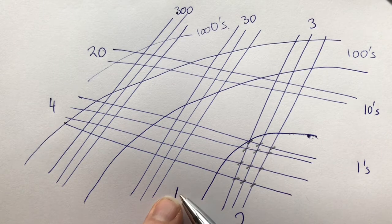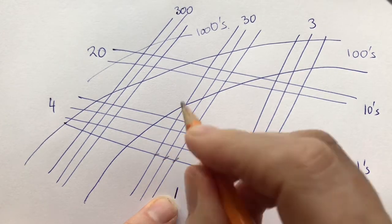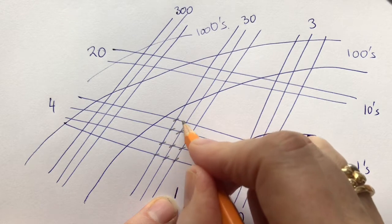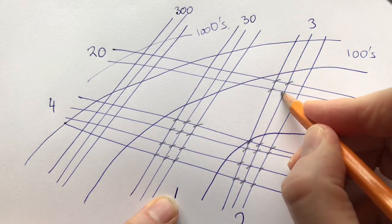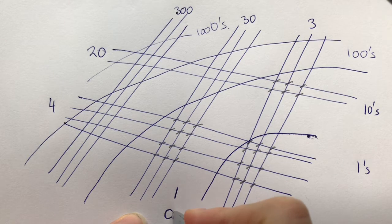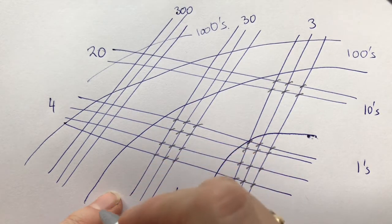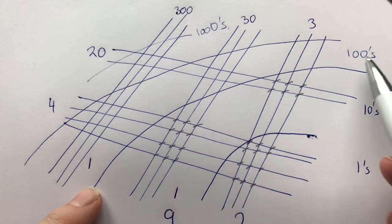Now we have our 1 here — we've got to add all of our 10 units. So we start with 1 and count: 2, 3, 4, 5, 6, 7, 8, 9, 10, 11, 12, 13, 14, 15, 16, 17, 18, 19. So we got 19, which means 9 ones, and our 1 from 19 goes over to the next block, which is our block of hundreds.